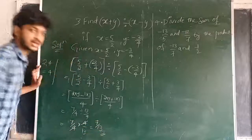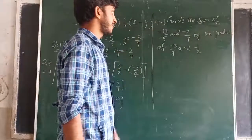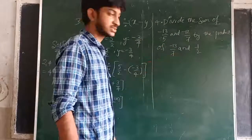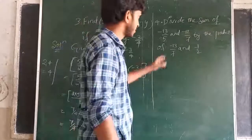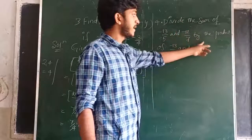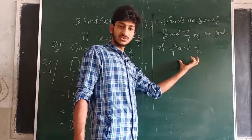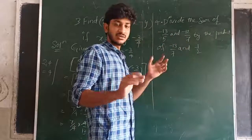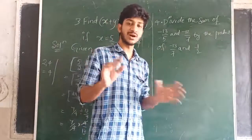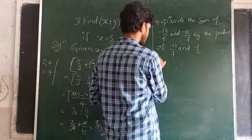Now see the next question: divide the sum of minus 13 by 5 and minus 2 by 7 by the product of minus 13 by 5 and minus 1 by 2. We have to add these two numbers, then multiply these two numbers, and after getting both answers, we simply divide them. First of all, I am adding minus 13 by 5 plus minus 12 by 7.